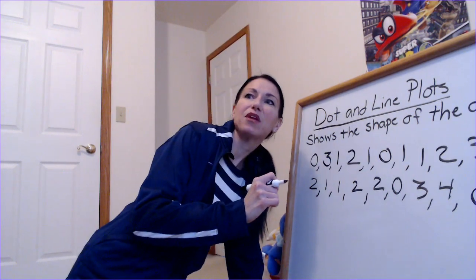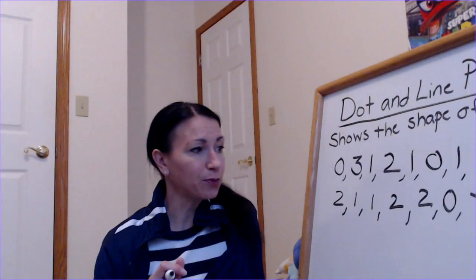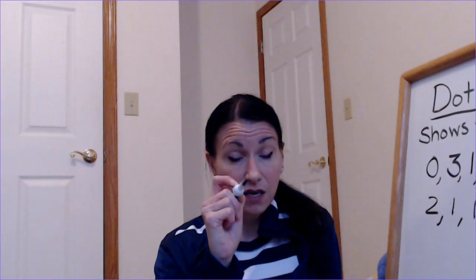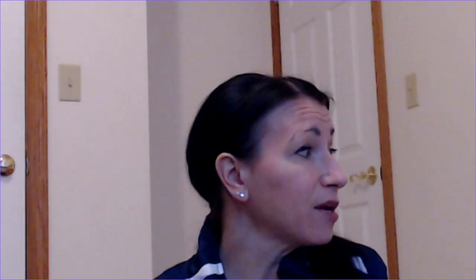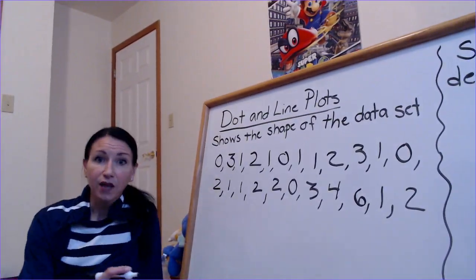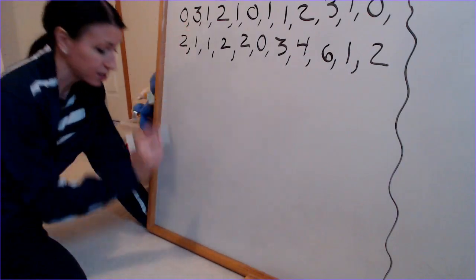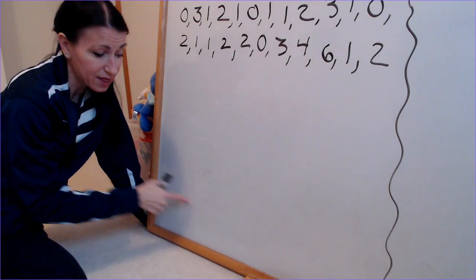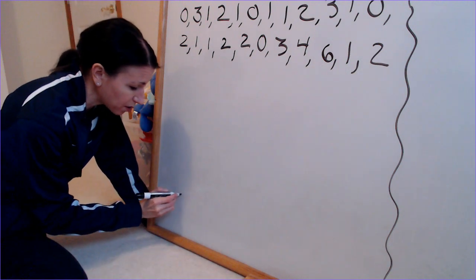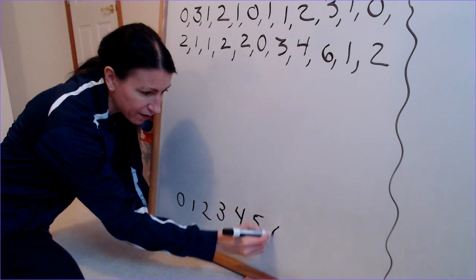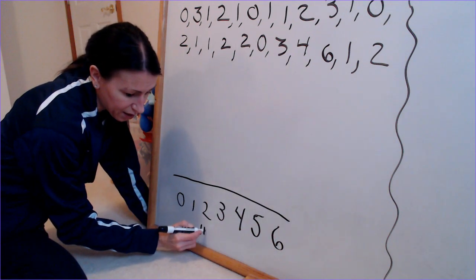When we're making a dot plot or a line plot we make them exactly the same — literally the dot plot you make dots, for a line plot you make X's, that's it. I look at my numbers: my lowest is zero, my highest is six. So I'm going to make a number line from zero to six. If nobody had five pets I still have to put five — no skipping numbers, not allowed. So: zero, one, two, three, four, five, six.